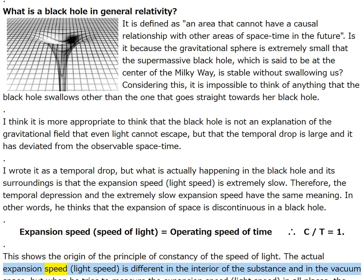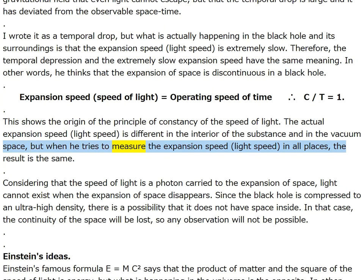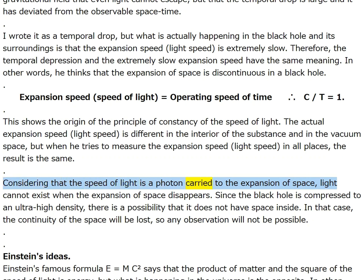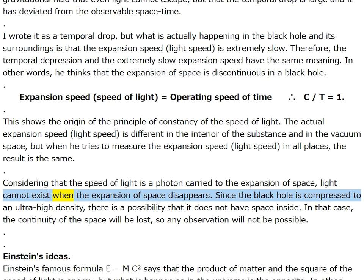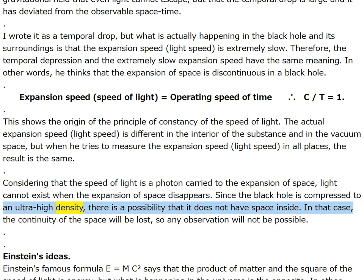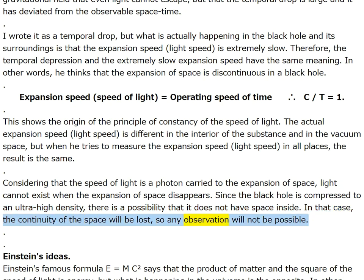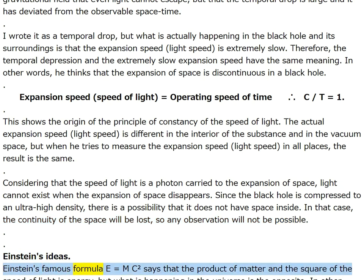The actual expansion speed (light speed) is different inside matter and in vacuum space, but when measuring the expansion speed everywhere, the result is the same. Light cannot exist when the expansion of space disappears. Since the black hole is compressed to ultra-high density, it may not have space inside — in that case the continuity of space will be lost and no observation will be possible.